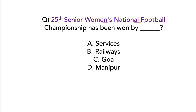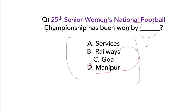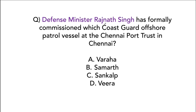The 25th Senior Women's National Football Championship was won by Manipur — the defending champions — who defeated Railways in the final by a score of 1-0. Defence Minister Rajnath Singh formally commissioned the Coast Guard offshore patrol vessel Varaha at the Chennai Port Trust in Chennai.